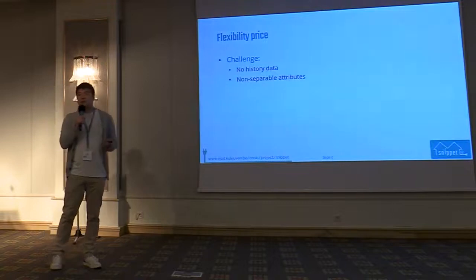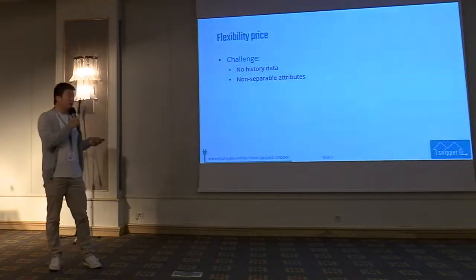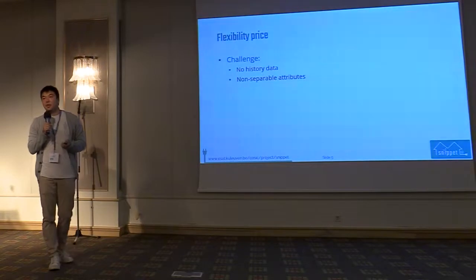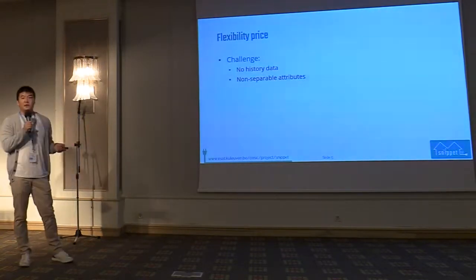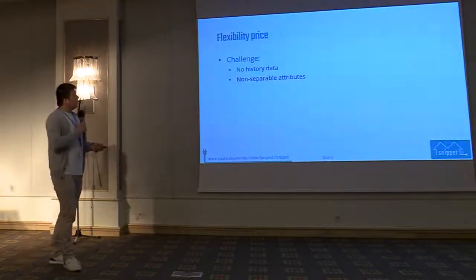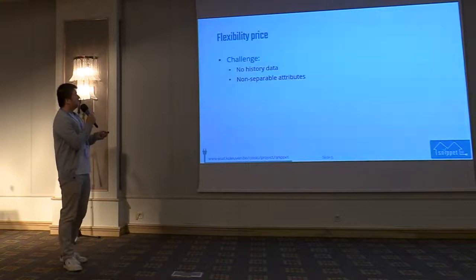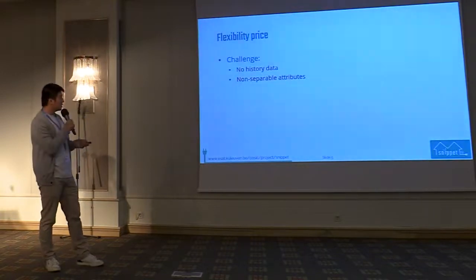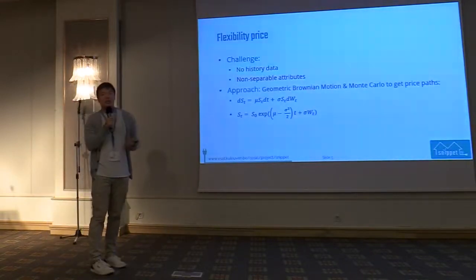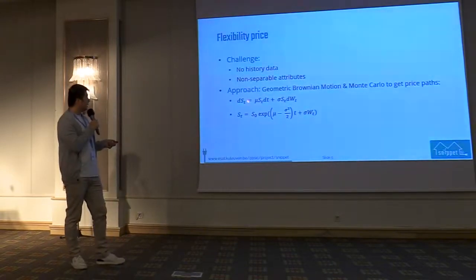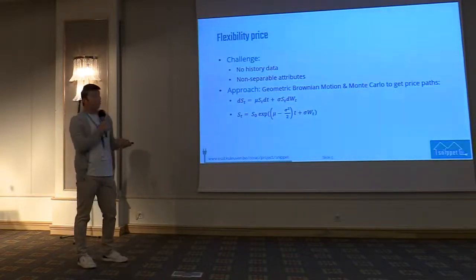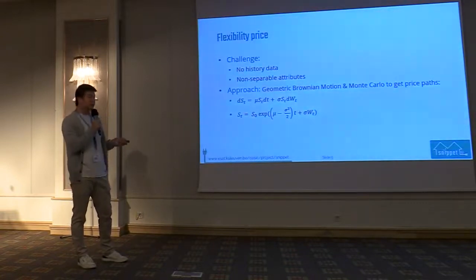Flexibility is highly bounded by multiple attributes that are equally important to determine its value: mainly the volume of flexibility, how much you want to provide; the time of use, when you want to provide it; and the duration of flexibility provided. To solve this problem of non-historical data, we propose an approach using geometric Brownian motion — a stochastic differential equation. We can use this to simulate a large number of price paths with a drift term and a diffusion term, generating a random path to represent the price signal for flexibility.